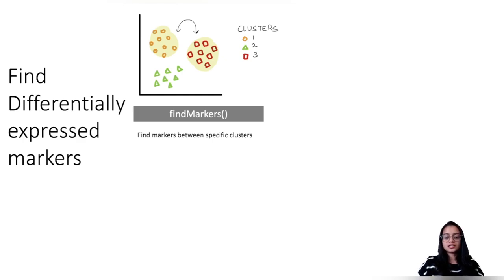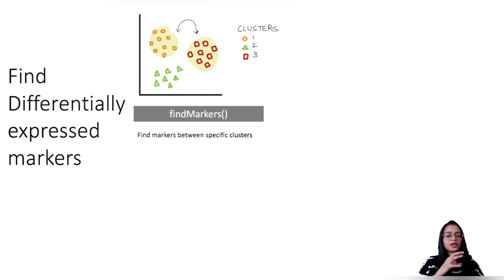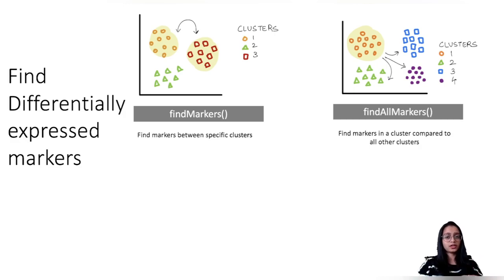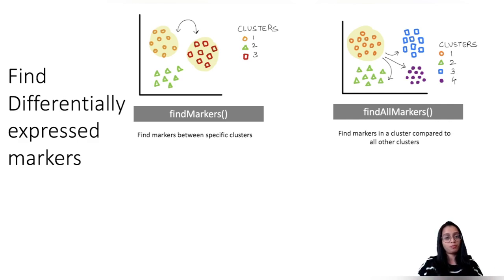The next question you might ask is: I want to identify the cell types in my clusters — what is the identity of each cluster? In that case, it makes sense to identify markers that are highly expressed for each cluster. You would essentially want to compare each cluster versus all the other clusters. When you want to make such a comparison, FindAllMarkers would make sense because it iteratively compares one cluster with all the other clusters and gives you the genes that are differentially expressed, helping you identify what cell types form each cluster.